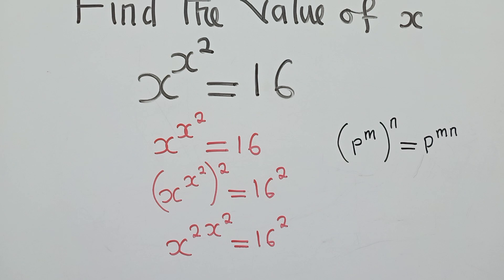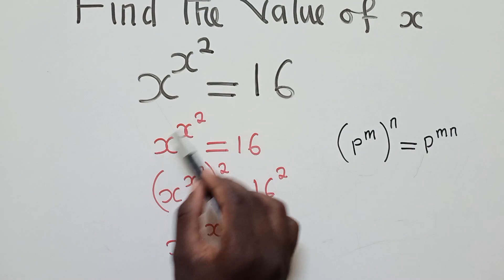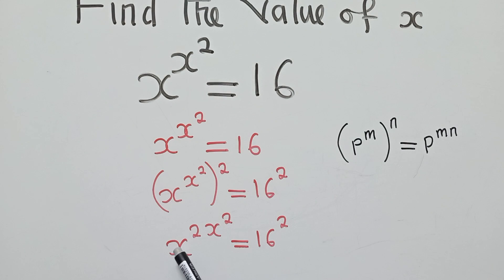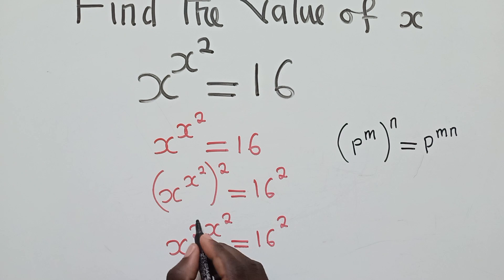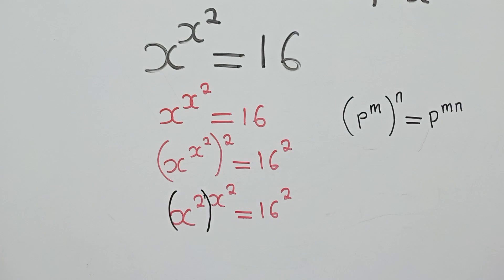The main idea of doing all these steps is to make this expression look similar on both sides. You can see we have x power 2 here and x power 2 here, so we can factor these two like this. This is what we have — the structure is now similar on both sides.